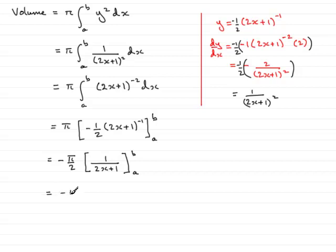Now all I need to do is substitute b through and then a through and subtract those two answers. So we have minus pi over 2, we put the b through so we have 1 over (2b plus 1), and then minus, and put the a through where there's the x, so we'd have minus 1 over (2a plus 1).